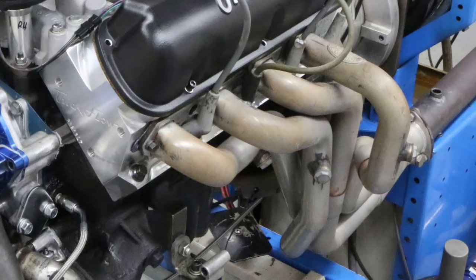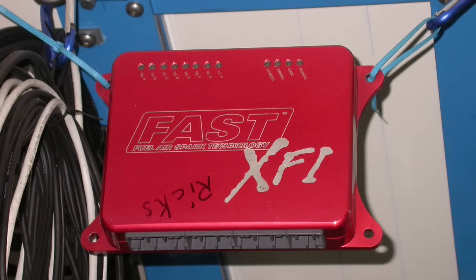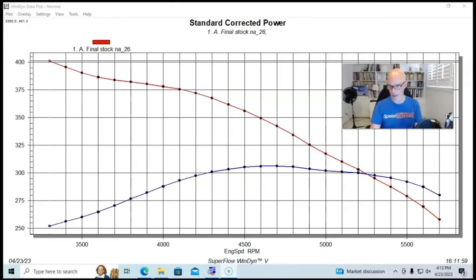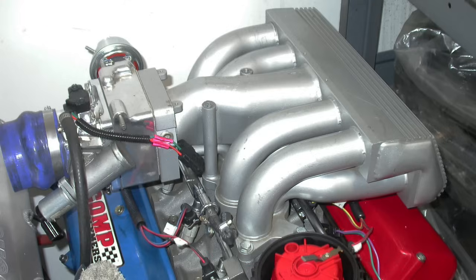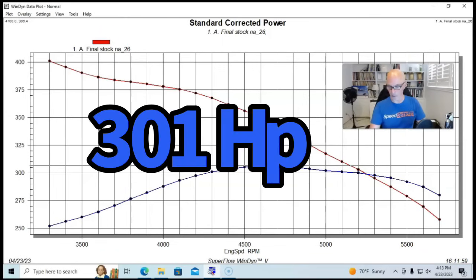And a 70 millimeter throttle body, inch and three quarter long tube headers, 36 pound injectors, and we ran this all with a FAST management system way back then. Running in this manner, our admittedly choked off 347 with stock five liter heads and camshaft produced 301 horsepower at 5100.